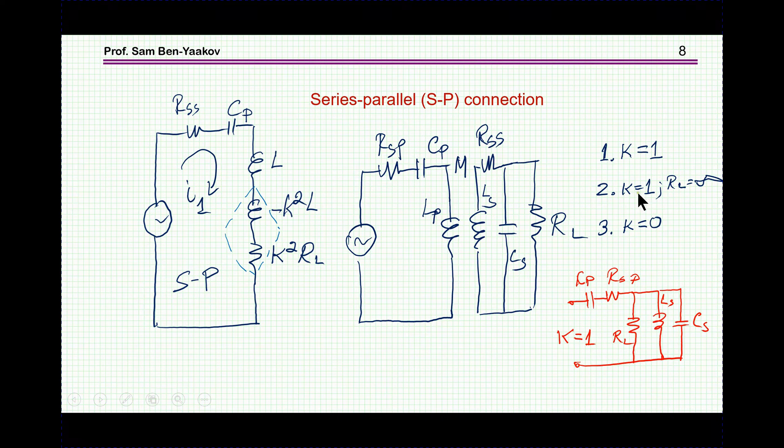Now, what happens if K equal to 1, and the RL is going to infinity? That is, this one goes to infinity, or here, I should say, goes to infinity. In this case, this goes to infinity. We have here, actually, a parallel resonance, ideal parallel resonance circuit, and, therefore, the impedance is infinity.